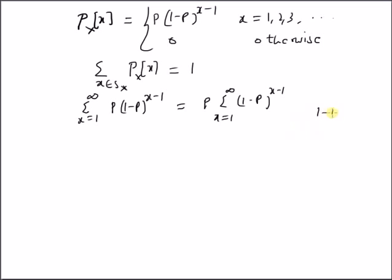By defining 1 minus p equals q and x minus 1 equals n, we have the summation equal to p times the sum from n equals 0 to infinity of q to the power n. This is the classical geometric series for q less than 1, which equals 1 over (1 minus q).